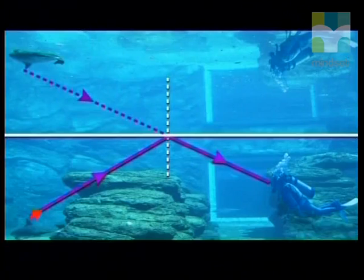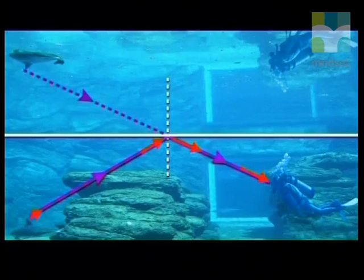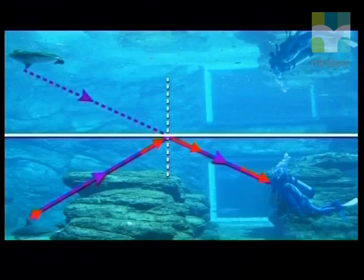Can you now explain why a diver can see a shark around a rock? It's because of total internal reflection. Light from the shark hits the boundary between the water and the air above, but the angle of incidence is greater than the critical angle, which means the light is reflected. If the diver looks up at the right moment, the reflected light will enter his eyes and he will see the shark. If the diver and shark aren't in exactly the right position, the diver wouldn't be able to see the shark.